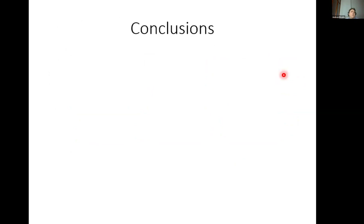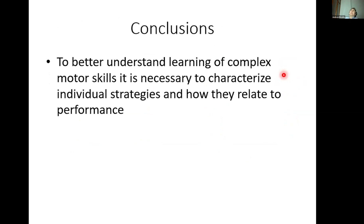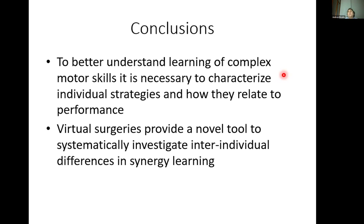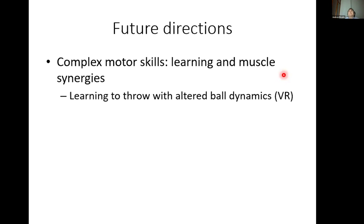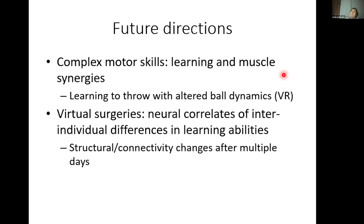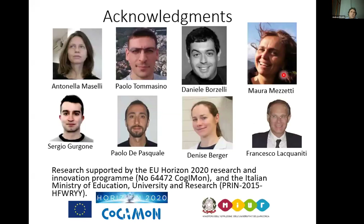In conclusion, to study learning of complex motor skills we need methods to compactly characterize strategies and relate them to performance. Virtual surgeries provide a tool to systematically investigate individual differences in the learning of synergies. Future work will examine how new dynamics in virtual reality can be learned, and look at neural correlates using functional and structural MRI to identify specific changes in connectivity and morphometry when compatible and incompatible synergies are learned.